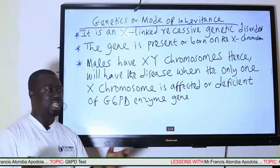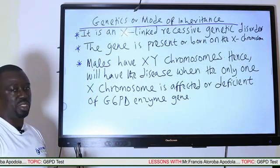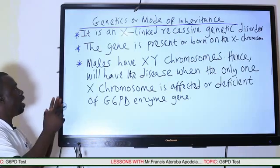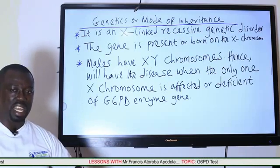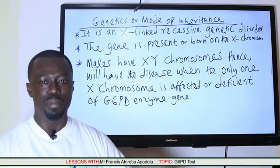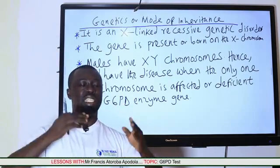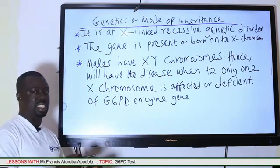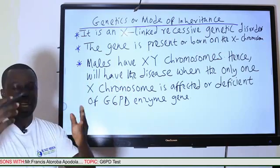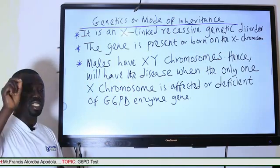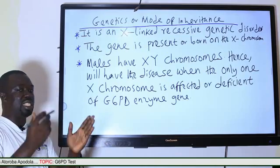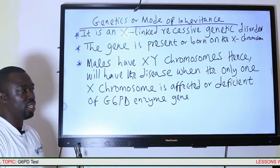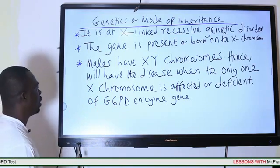Let's look at the genetics of G6PD in detail — specifically how the G6PD enzyme is inherited, that is, the mode of inheritance. Recall that G6PD deficiency is an X-linked recessive genetic disorder, meaning the G6PD enzyme is borne on the X chromosome and not the Y chromosome.